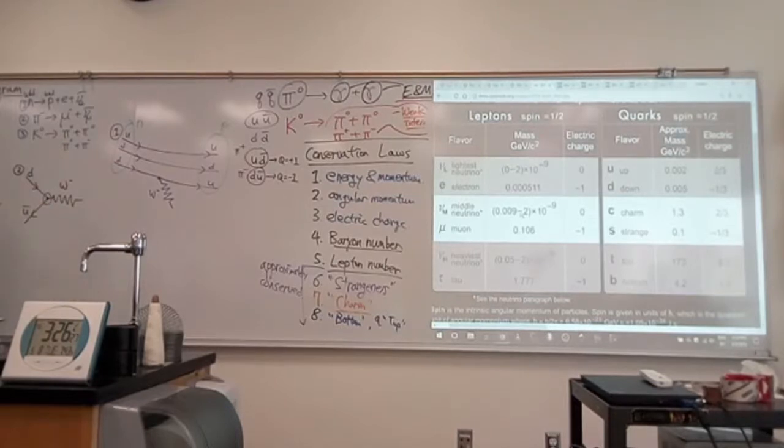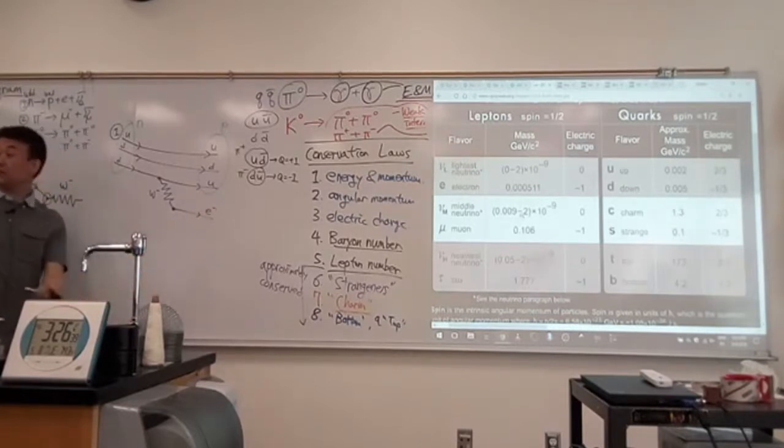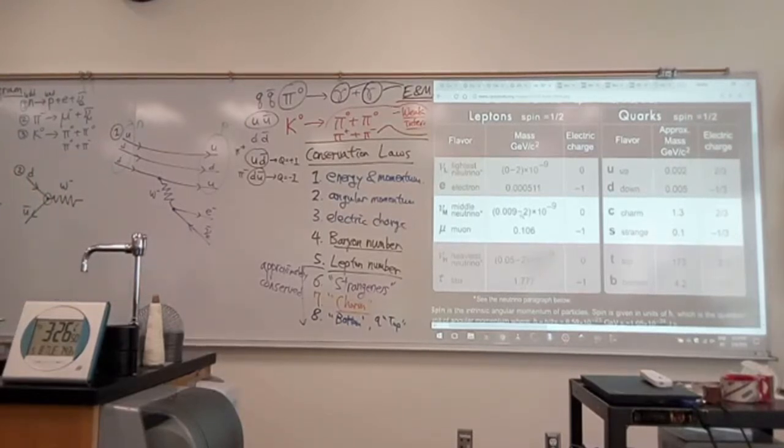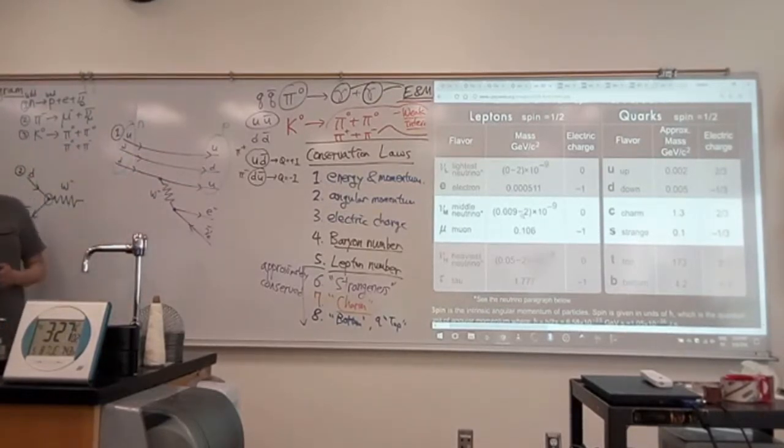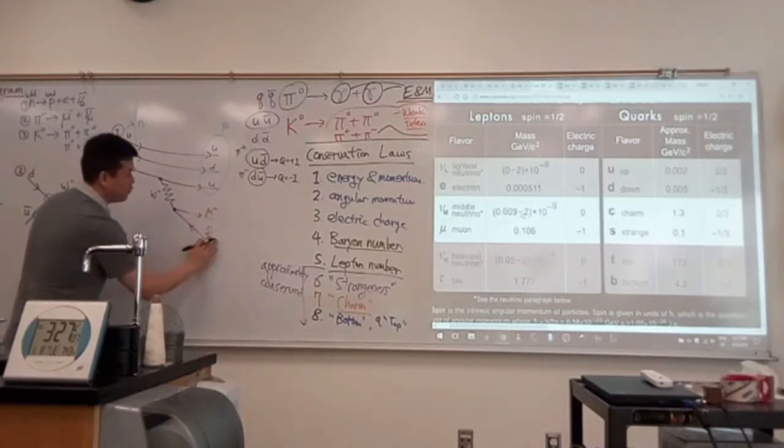So this W boson turns into, I guess I'm using this one, turn it around. So the W minus should turn into electron, or it could actually turn into muon, but let me talk about that in a bit. It should turn into electron and antineutrino.